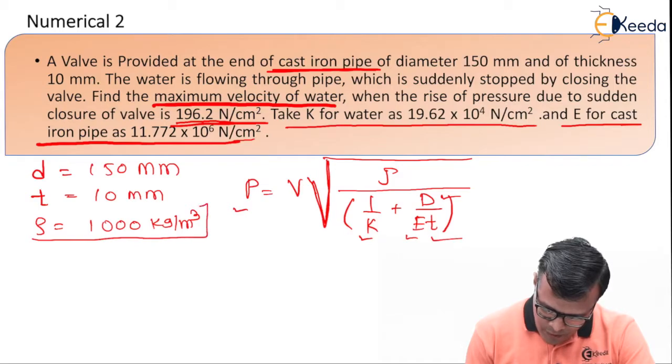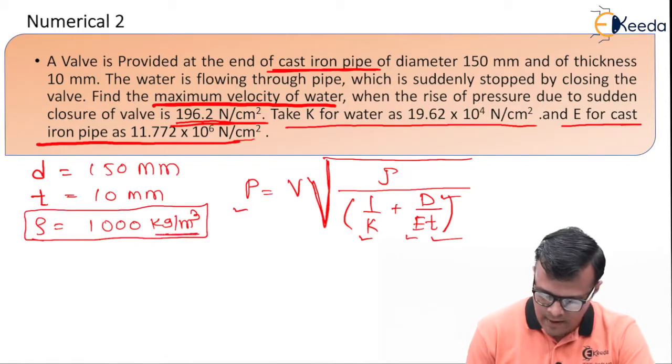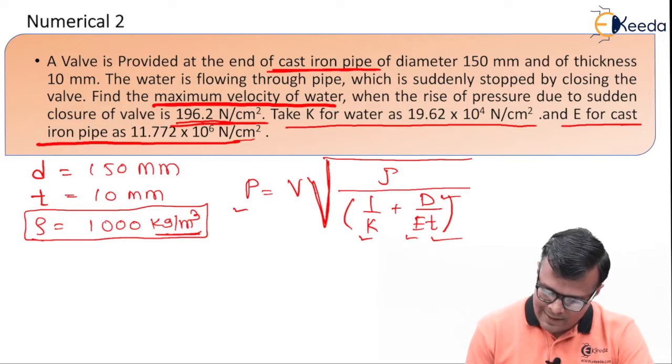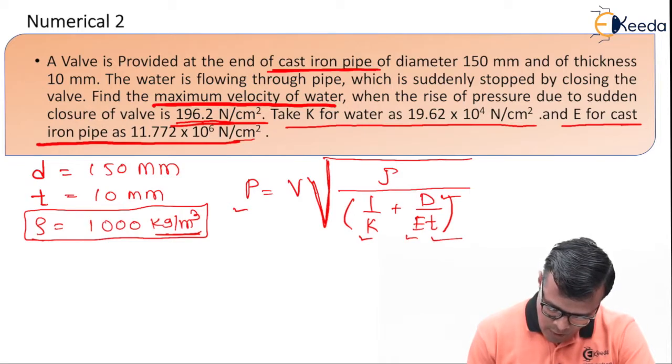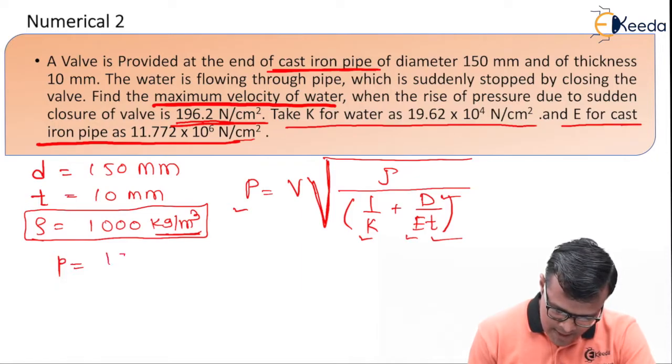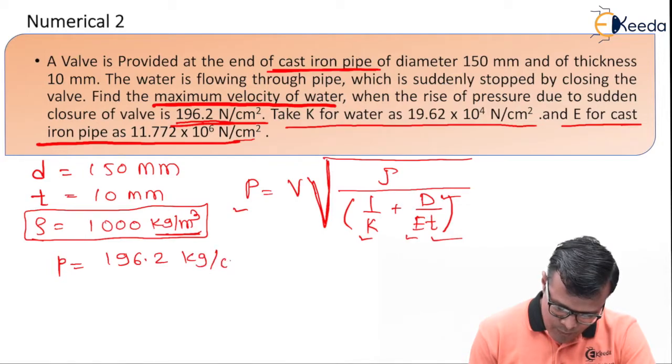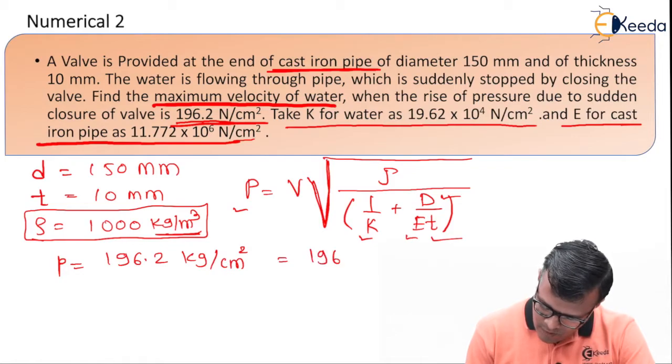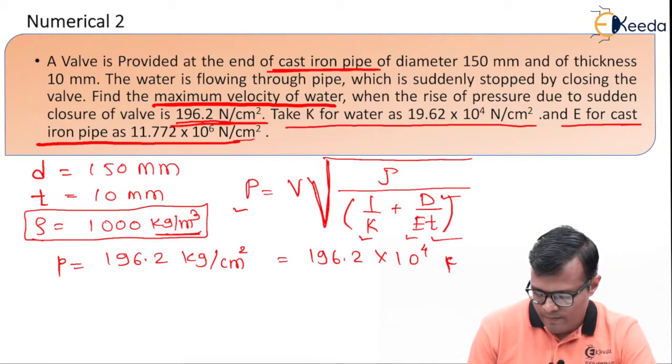But the value of ρ which is given to us is in kg per meter cube. Either convert it into centimeter cube or convert these remaining terms into centimeter cube. So P is equal to pressure is given to us as 196.2 kg per centimeter square, so to convert centimeter square into meter square we will have formula 196.2 × 10^4 kg per meter square.